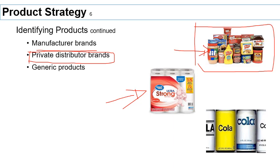Upwards of 60% of sales in some categories comes from store brands. You will not see store brands, however, in some industries — like the car industry — where the financial business model and brand equity don't support it. Finally, we have generic products — these are products sold with no advertising and no branding.